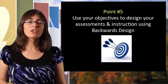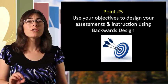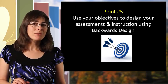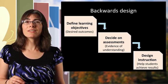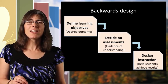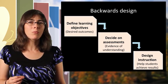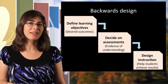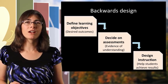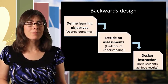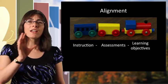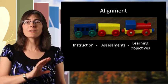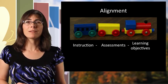Point five, use your objectives to design your assessments and instruction using backwards design. So remember backwards design is where we define our objective and then we decide on our assessments. And it can be helpful to brainstorm what an acceptable answer would be on that assessment to really make our objective concrete. And then our final step is that we design the instructional techniques. And the process of having our objectives, assessments, and instruction all work together is called alignment.